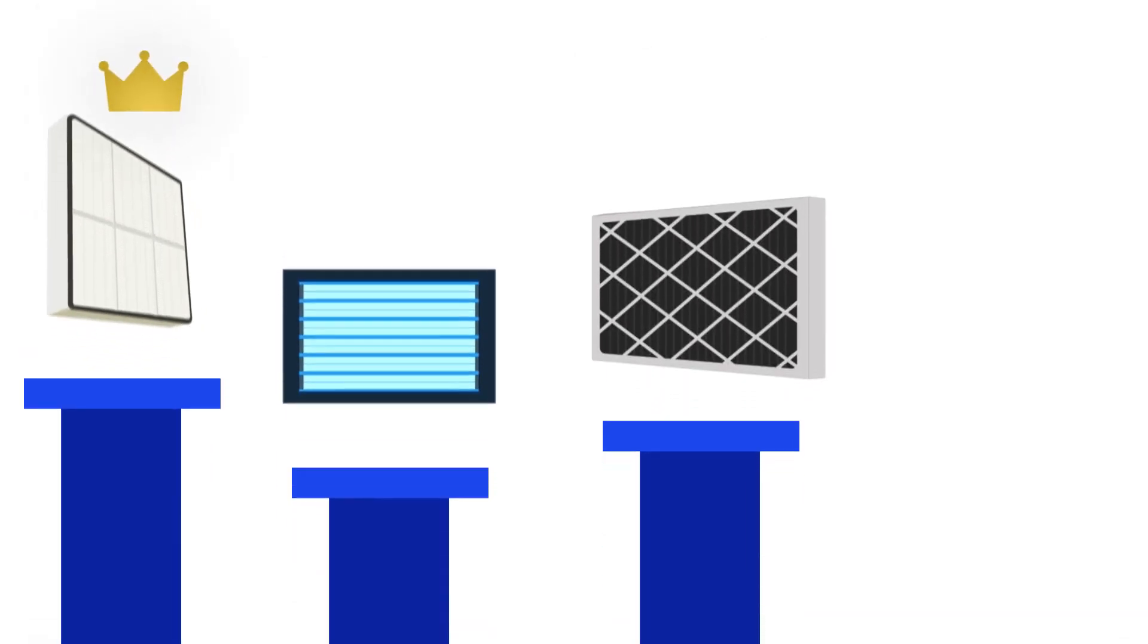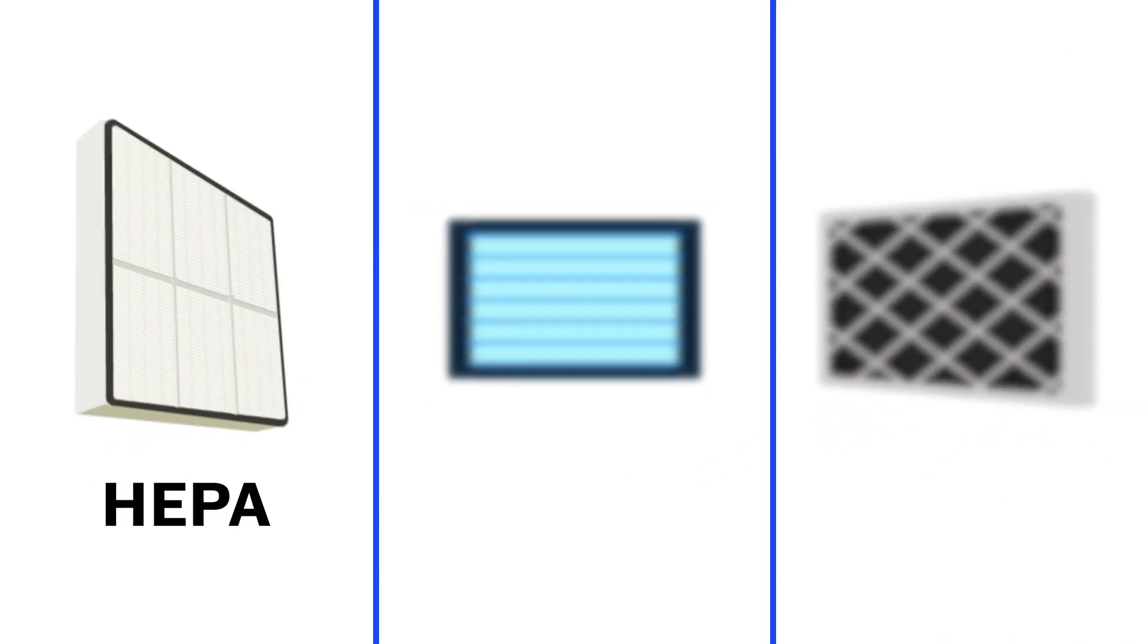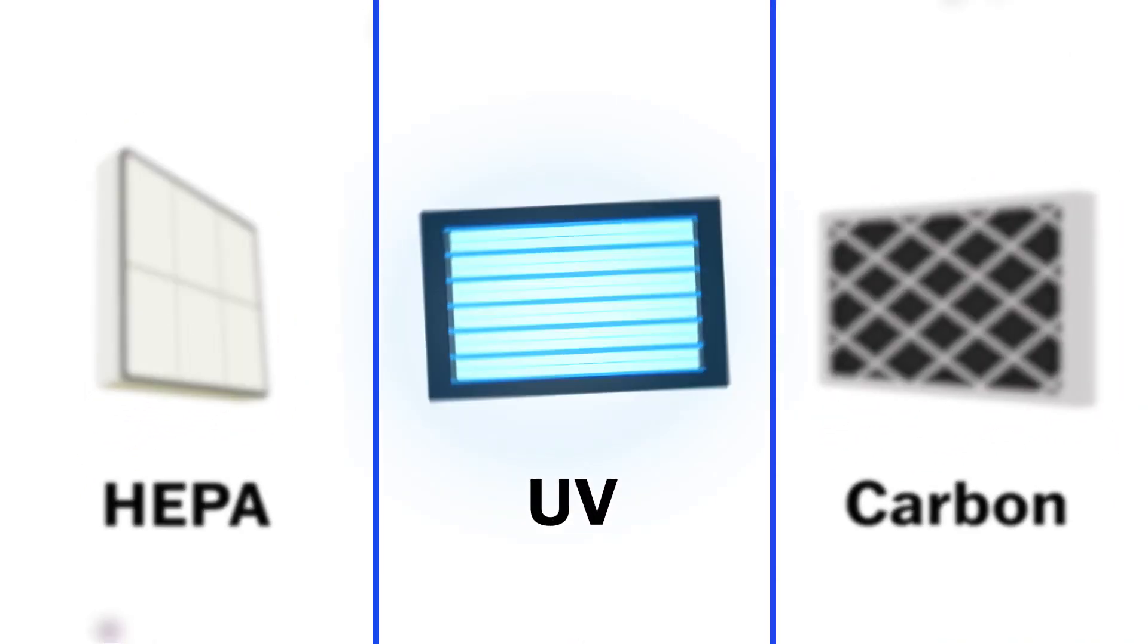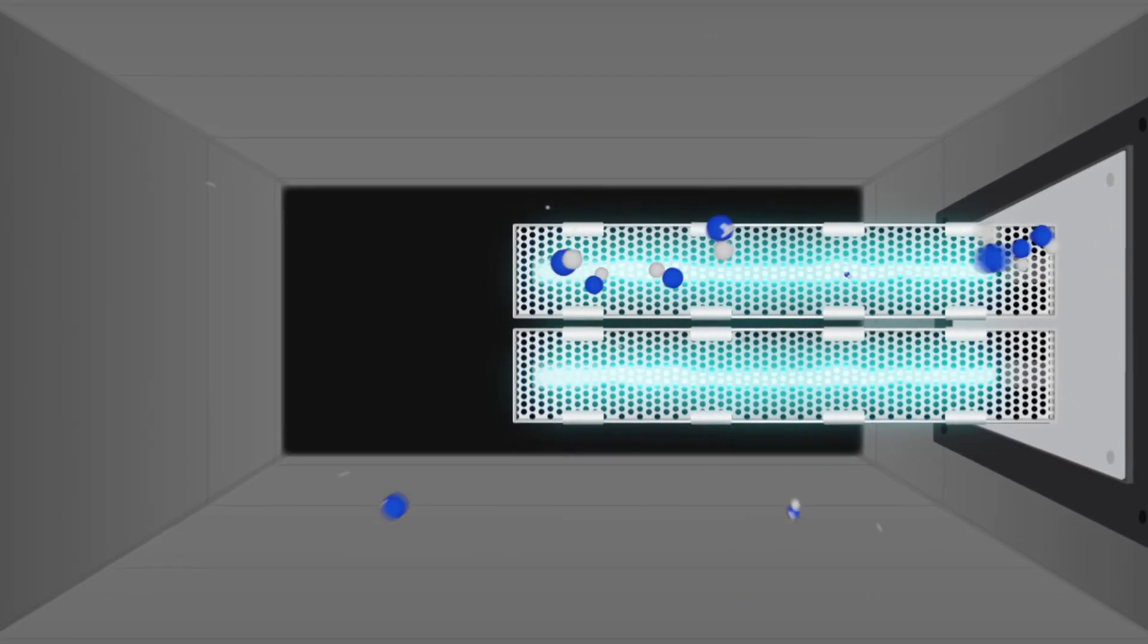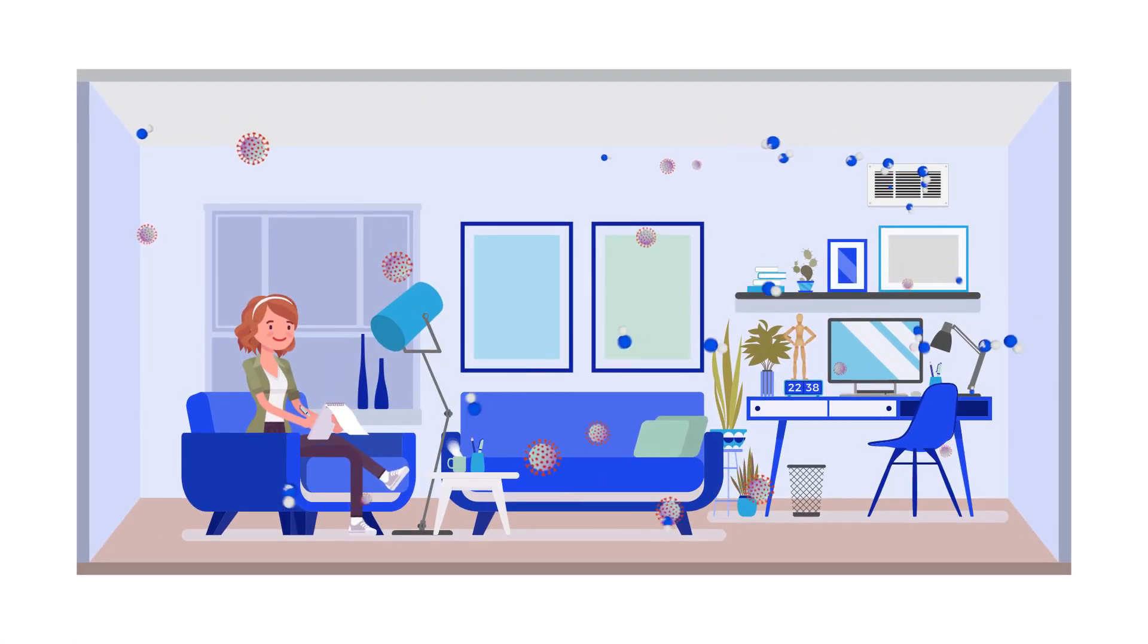There are many air purification systems out there, but there's only one ActivePure. Other systems, such as HEPA, activated carbon, and UV light are passive, waiting for pathogens to come to them. ActivePure technology is proactive, neutralizing many contaminants before they even reach the ActivePure unit.